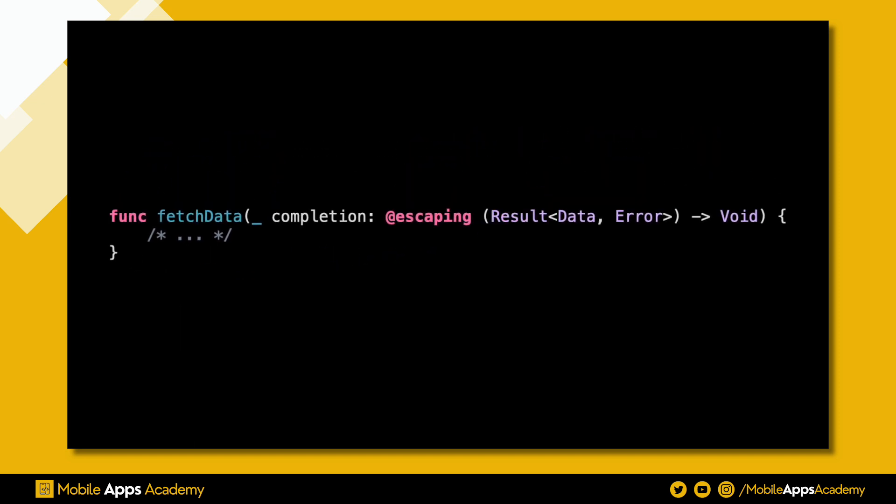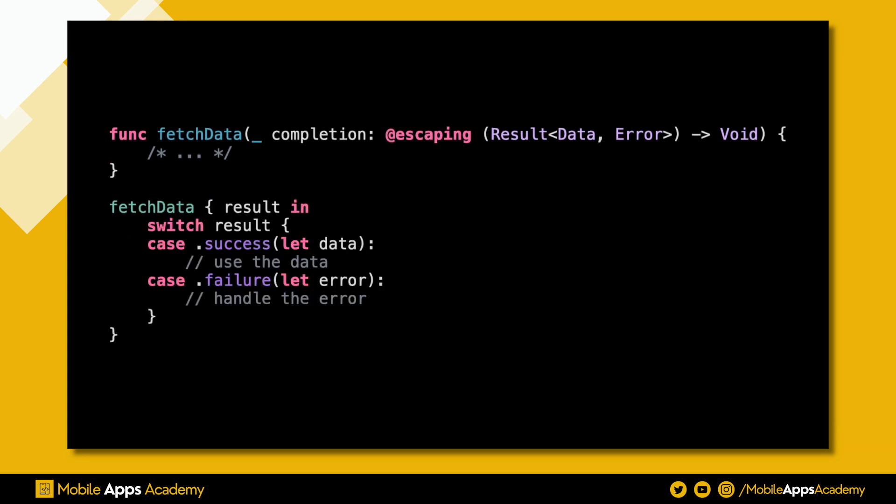Now let's see how you can use the result type. With result type, you switch on the result to handle both success and failure cases explicitly. This approach is cleaner and eliminates the need to deal with multiple optionals.